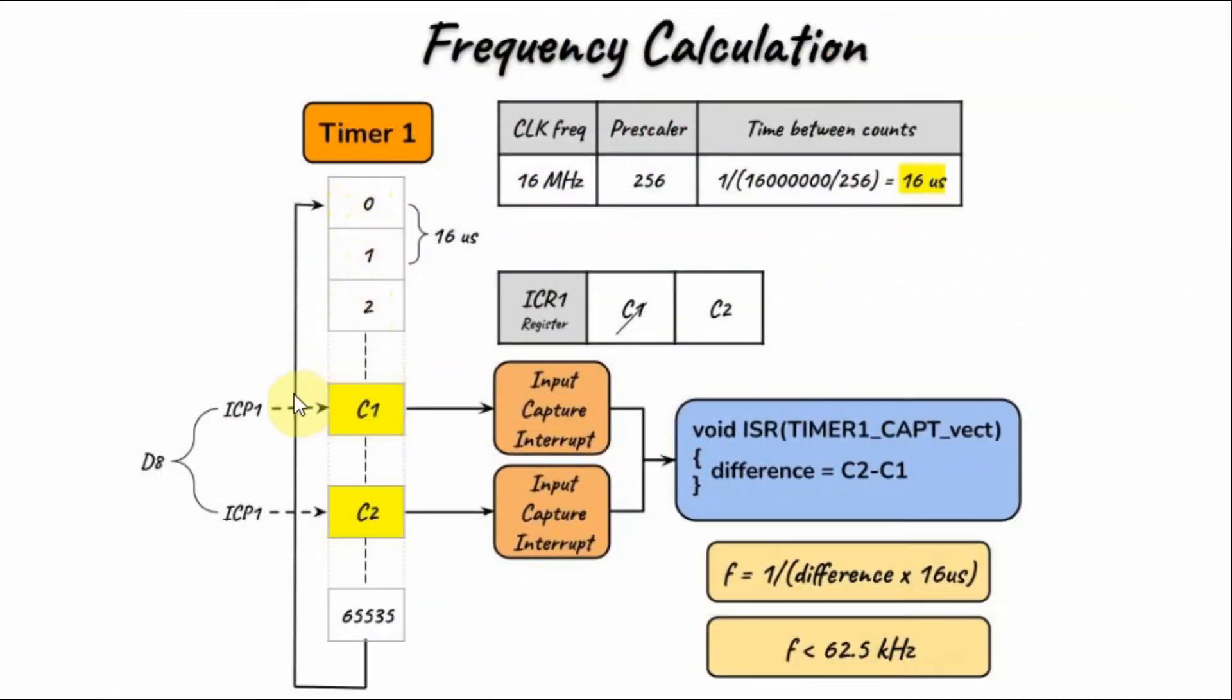During Timer 1 counting, when a rising edge pulse is present at pin D8, this count value is stored in the input capture register and the input capture interrupt is initiated, executing this interrupt service routine, and the count value is stored.